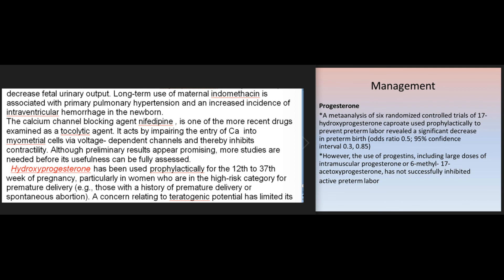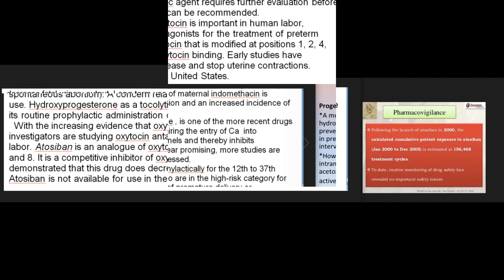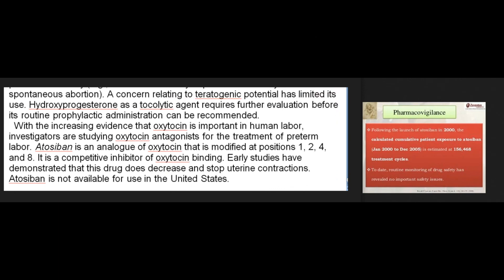The calcium channel blocking agent nifedipine is one of the more recent drugs examined as a tocolytic agent. It acts by impairing the entry of calcium into myometrial cells via voltage-dependent channels, thereby inhibiting contractility. Although preliminary results appear promising, more studies are needed before its usefulness can be fully assessed. Hydroxyprogesterone has been used prophylactically from the 12th to 37th week of pregnancy, particularly in women at high risk for premature delivery — for example, those with a history of premature delivery or spontaneous abortion. A concern relating to teratogenic potential has limited its use, and hydroxyprogesterone as a tocolytic agent requires further evaluation before its routine prophylactic administration can be recommended.